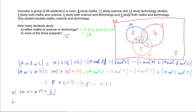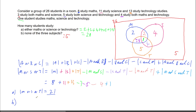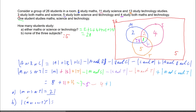To answer Part B — how many study none of the subjects — we take our grand total of 26 students and subtract the 21 who study at least one of the three subjects, giving five. So that's two ways of solving this problem: either draw a Venn diagram and sort out all the values within the circles, or use the inclusion-exclusion formula for three sets and plug in the numbers to get the answer directly.